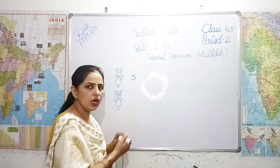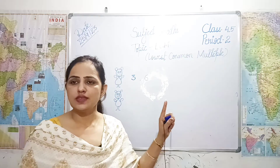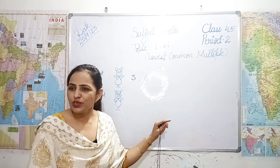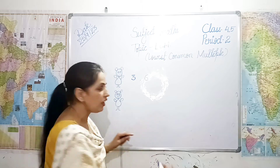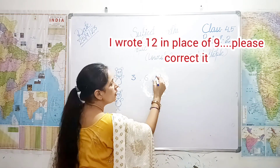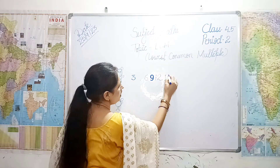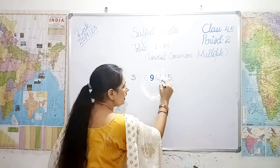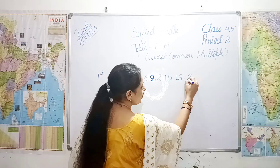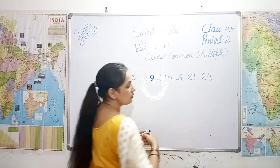The first rabbit jumps three each time. Second time he jumps to six, third time to nine, fourth time to twelve. Fifth time — fifteen, then eighteen, then twenty-one, then twenty-four. And so on, counting by threes.